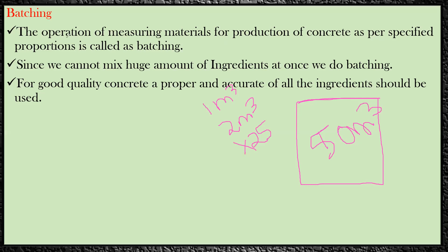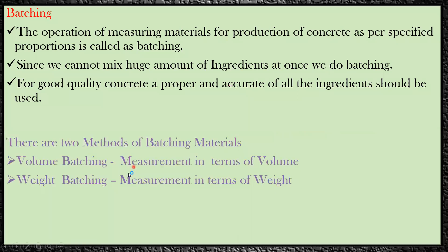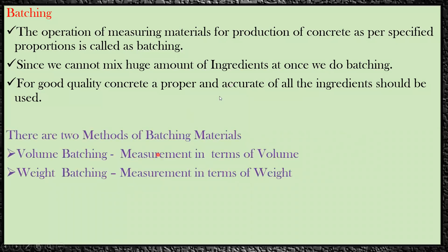That is why it is said: the operation of measuring the materials for the production of concrete as per the specified proportion is called batching. Since we cannot mix huge amounts of ingredients at once, we have to do small batches. For good quality concrete, a proper and accurate measurement of all ingredients should be used — this is what we mean by batching.